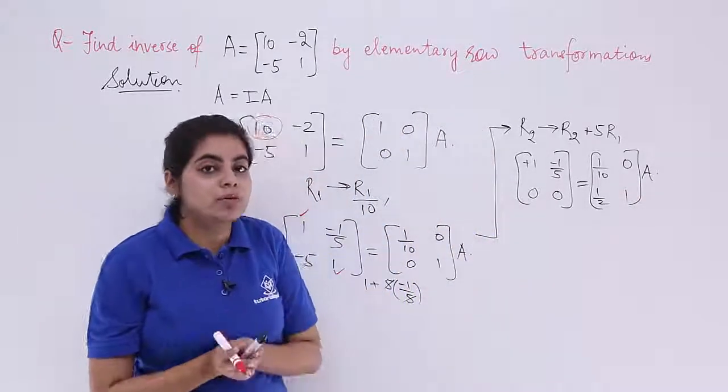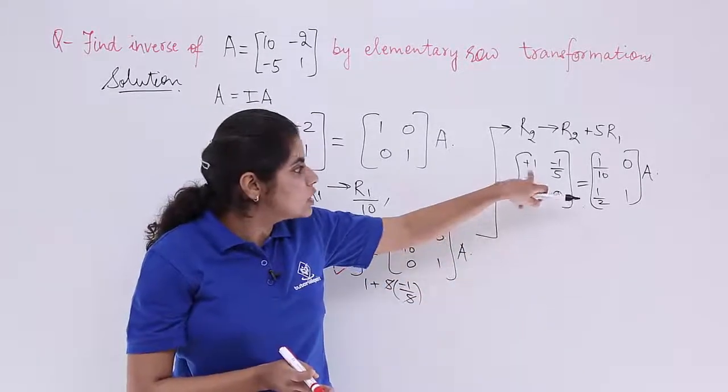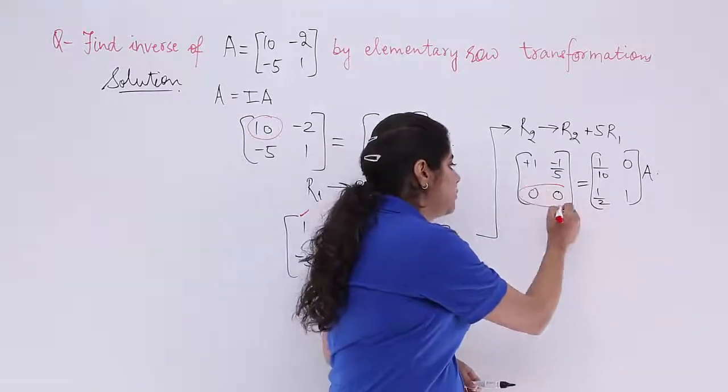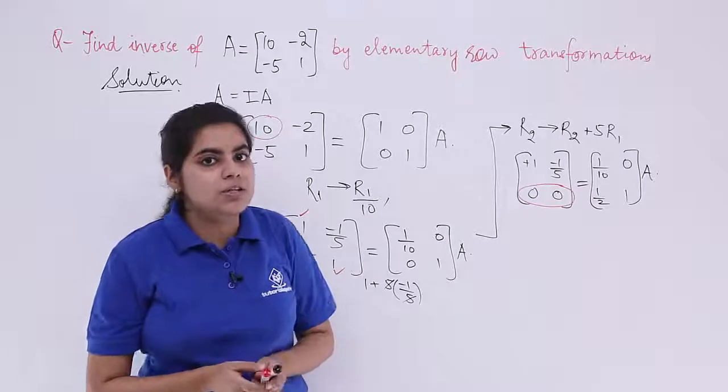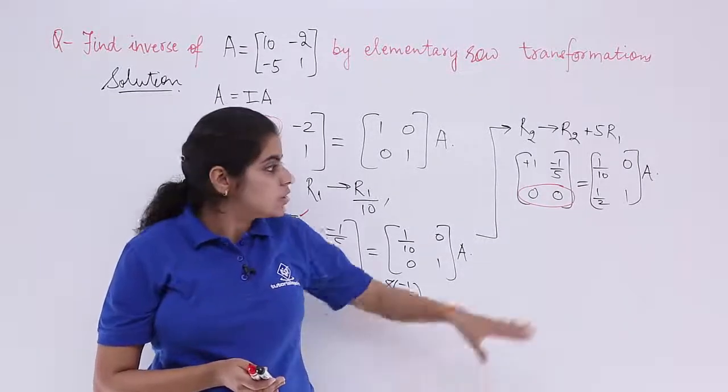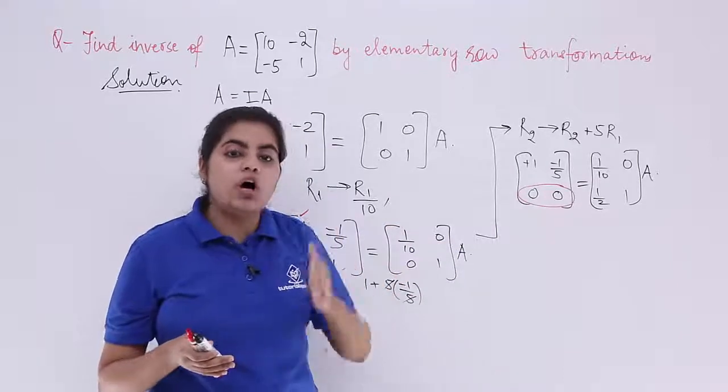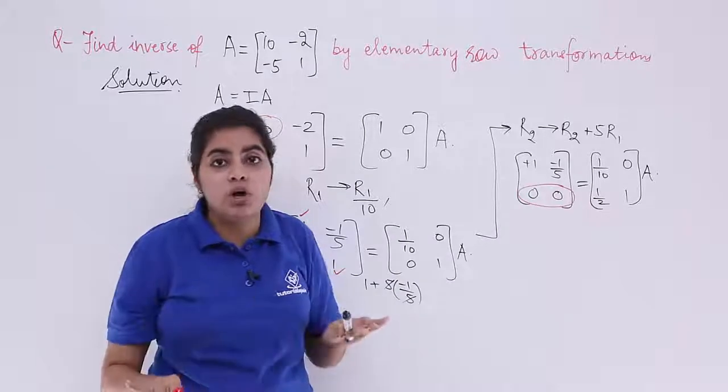Now what should be the inverse? The inverse should be corresponding to 1, 0, 0, 1. But here it is not 1, 0, 0, 1. In fact both these things have become 0. So whenever you solve these questions and in any case you get the row elements all as 0 or the column elements all as 0, you say that the inverse does not exist.